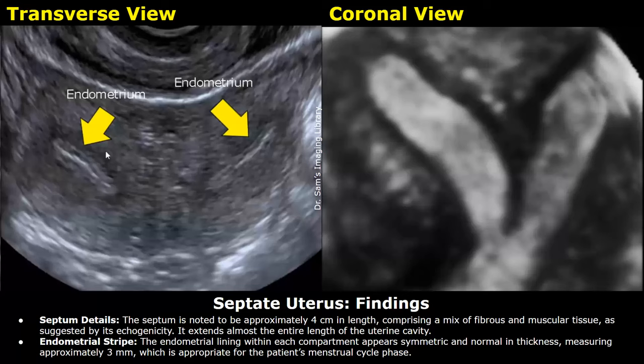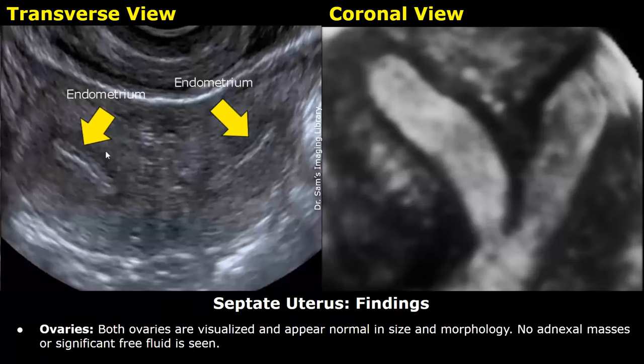It extends almost the entire length of the uterine cavity. Endometrial stripe: the endometrial lining within each compartment appears symmetric and normal in thickness, measuring approximately 3 millimeters, which is appropriate for the patient's menstrual cycle phase. Both ovaries are normal in size and morphology.